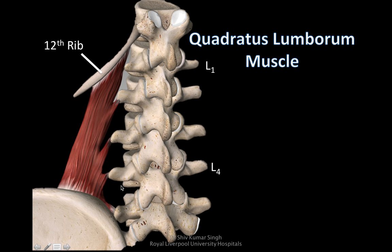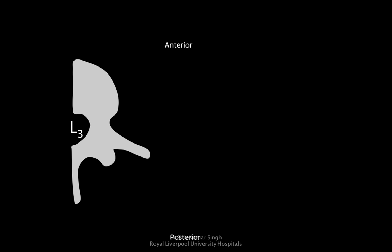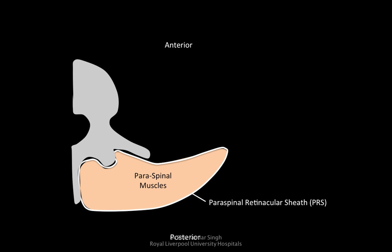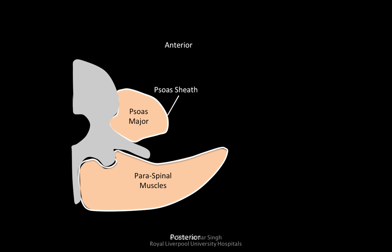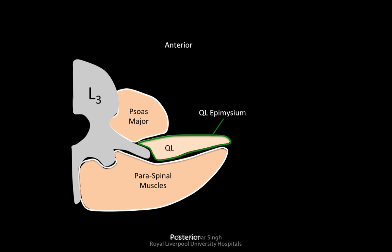So it's one of the muscles of the back. If we look at the muscles at the region of L2-L3, we have the paraspinal muscles, and these muscles are covered by the paraspinal retinacular sheath, or PRS. Then we have the psoas major muscle anteriorly, and again it's covered by its own sheath, the psoas sheath. Then we have the Quadratus lumborum lying between the psoas muscle and the paraspinal muscle, along with its epimysium.